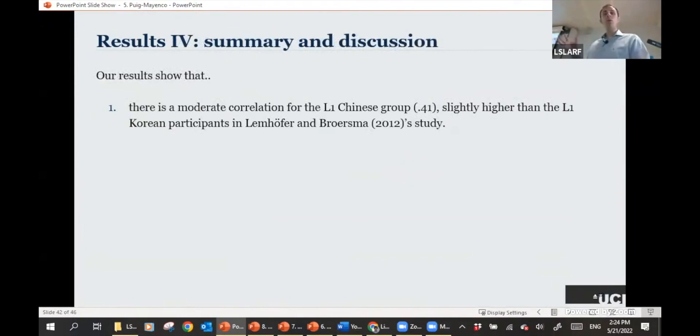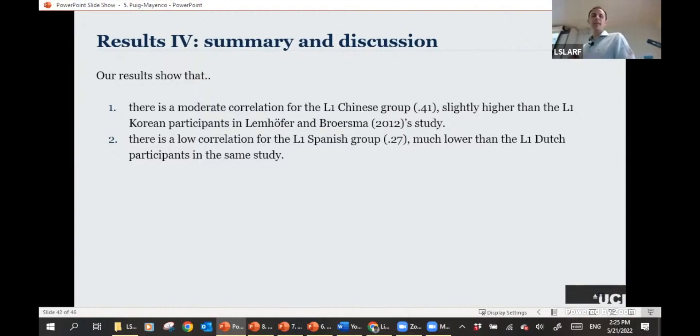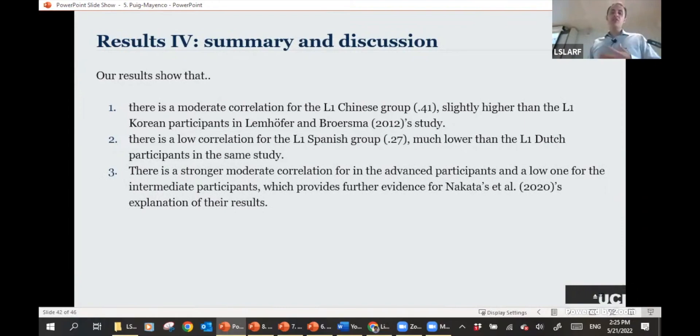So our results as a whole show that there is a moderate correlation for the L1 Chinese group, slightly higher for the L1 Korean participants in the Lemhöfer and Bridgman study. There is a low correlation for the L1 Spanish group, much lower than the L1 Dutch participants in the same study. But Dutch and English are Germanic languages. Spanish isn't. Perhaps that's telling us something about that. There is a stronger moderate correlation for the advanced participants and a low one for the intermediate participants, which provides further evidence for Nakata's and colleagues' explanations that the LexTALE does not quite work with intermediate learners.